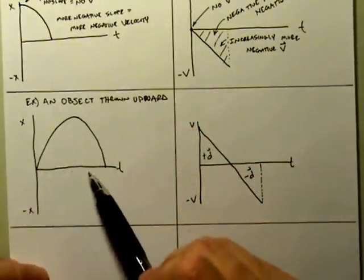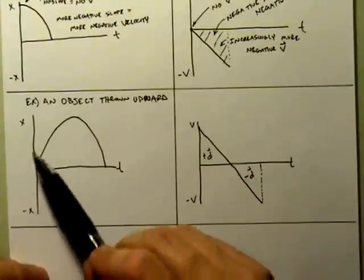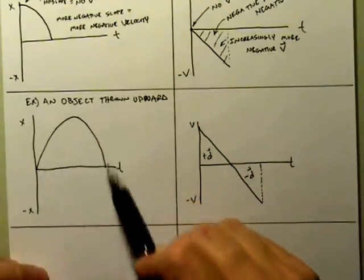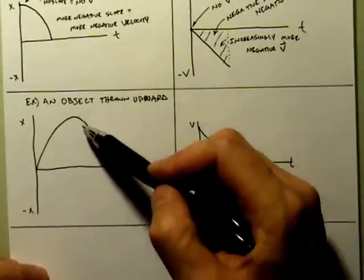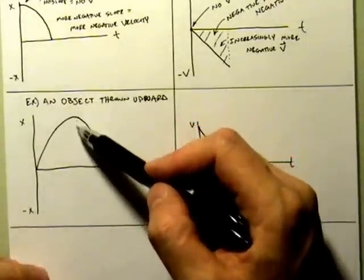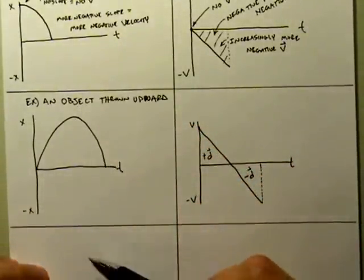Remember, this is a graph of position versus time. It's not a picture of the motion of the object. It wasn't thrown like a parabola. It was thrown straight up in the air, the velocity got slower and slower and slower, and then began to speed up in the negative direction.